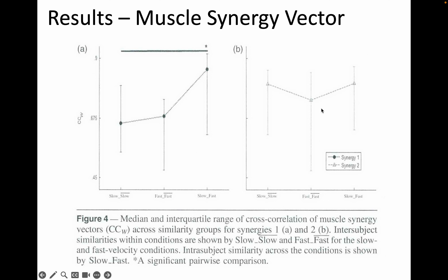Muscle synergy two told a slightly different story — the slow-slow and slow-fast conditions showed a little bit higher correlation — but the results the authors primarily focused on were mainly from synergy one.